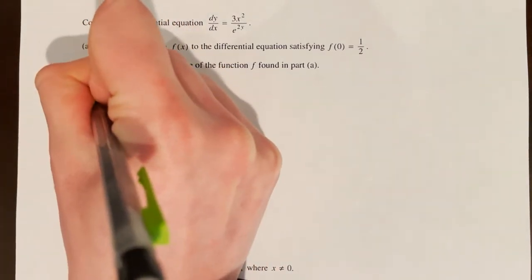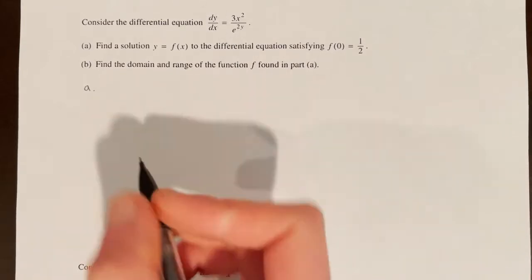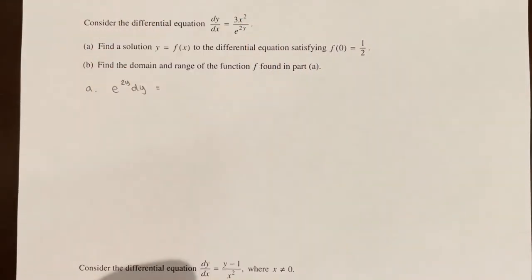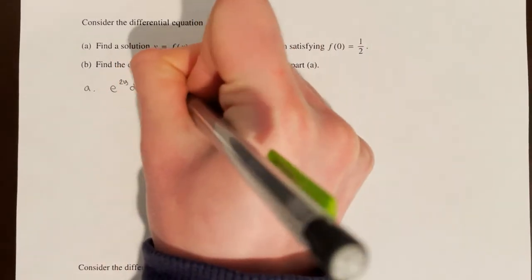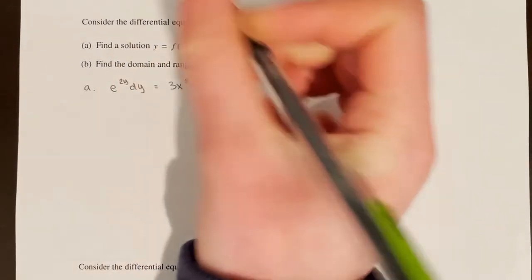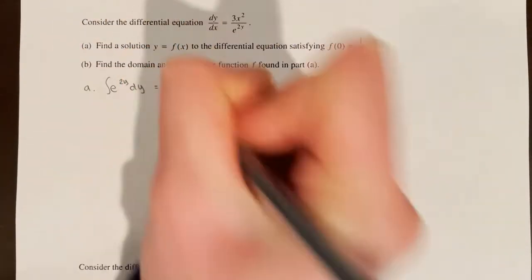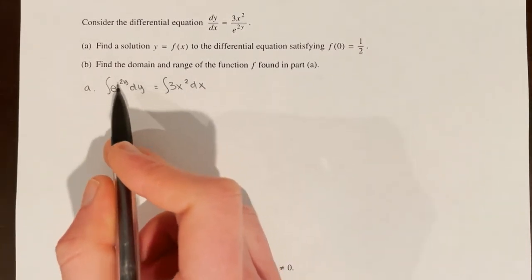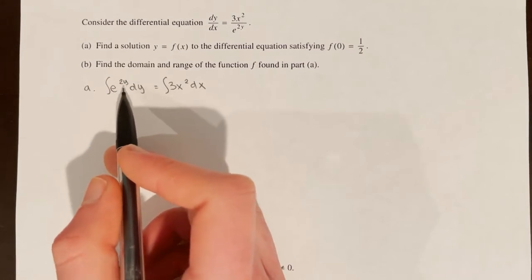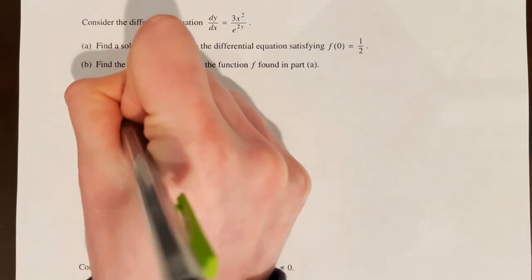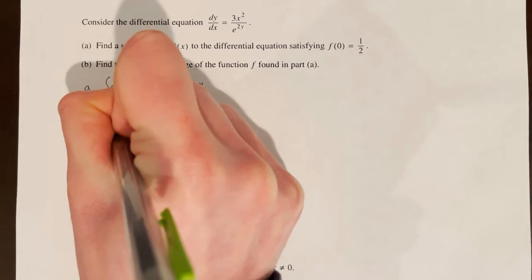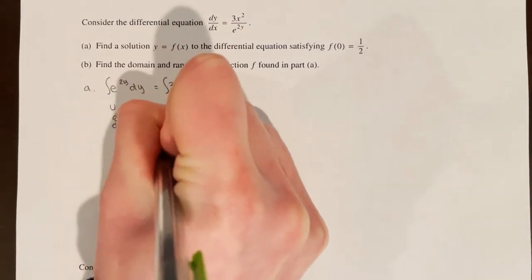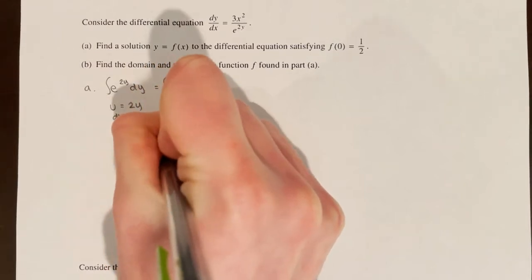First, separate the variables by bringing all y's to the left: e^(2y) dy = 3x² dx. To integrate the left side, I'll use u-substitution because 2y is inside the exponential. Let u = 2y, so du/dy = 2, meaning du = 2 dy, or (1/2)du = dy.